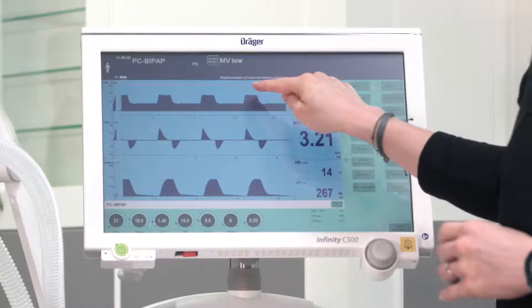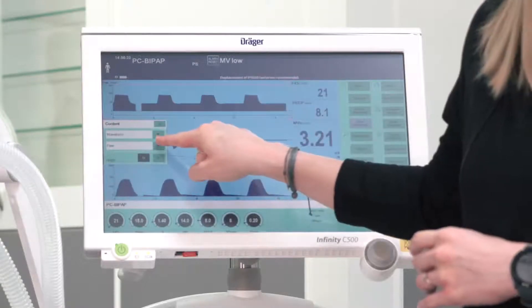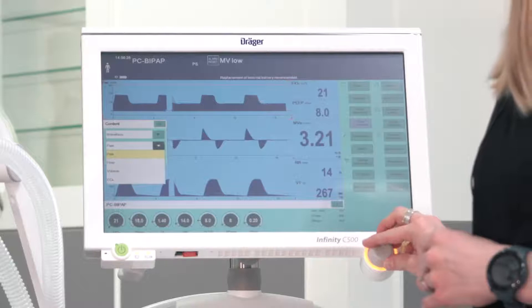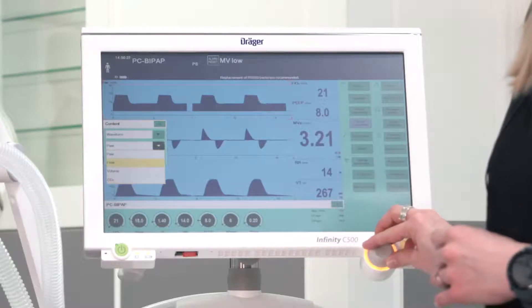If you want to change the measurements and waveforms displayed in your monitoring area you can simply select the respective fields and choose a different waveform from the menu. Confirm by pressing the rotary knob.